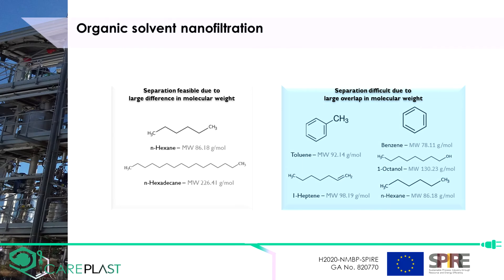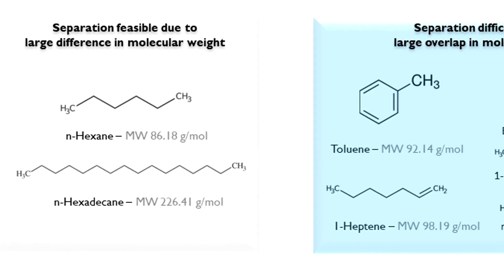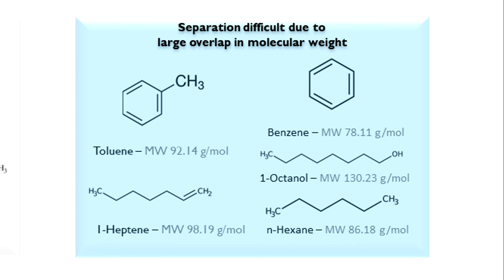Complex mixtures of organic solvents, as can be expected as a result of pyrolysis of plastics, are a challenge to separate due to the sheer amount of components with similar structures and/or molecular weights. On the left is a simple mixture of hexane and hexadecane — components with a large difference in molecular weights — for which separation with organic solvent nanofiltration is feasible. On the right is an example of a challenging mixture where most components are similar in mass and structures. This separation will not be very selective and would require many stages of organic solvent nanofiltration to achieve sufficient separation.